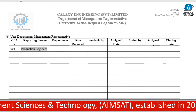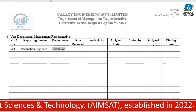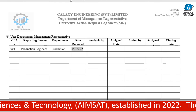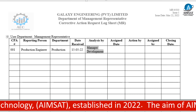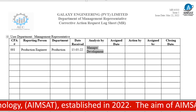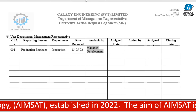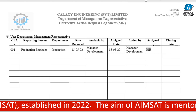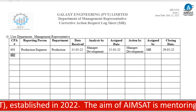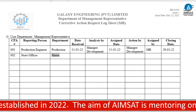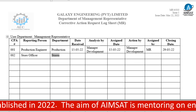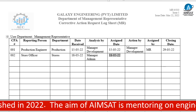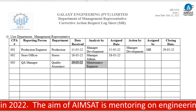The management representative is the department using and recording all CARs in this request log sheet. CAR 001 was reported by a production engineer from the production department, and MR received CAR 001 on 15th May 2022. It was forwarded to the manager of development for analysis on the same day, with action assigned by MR and a closing date of 29th May.